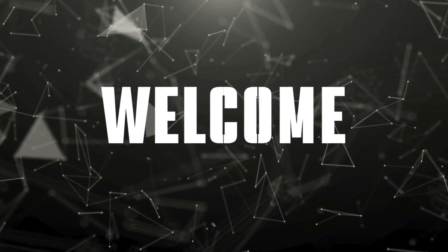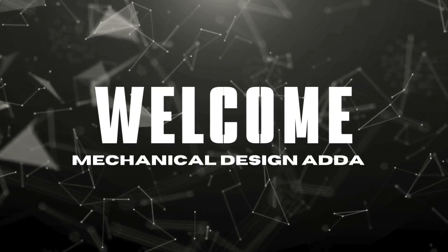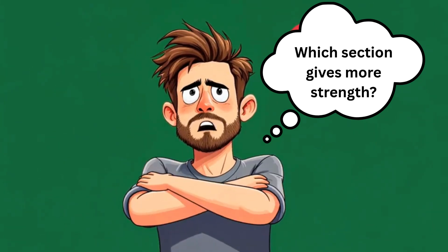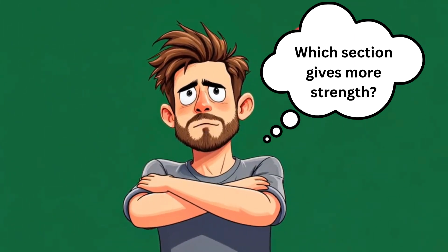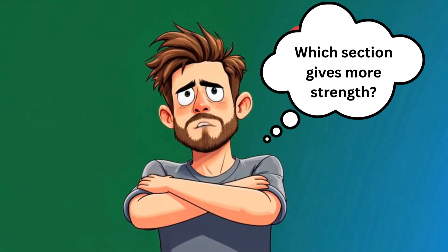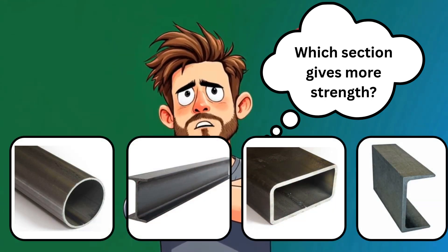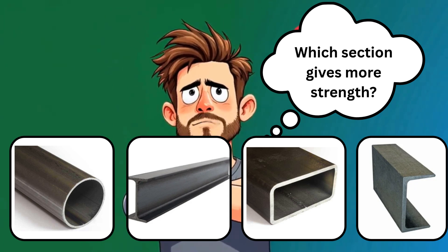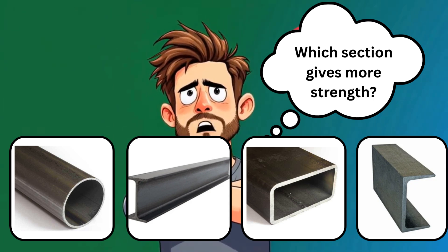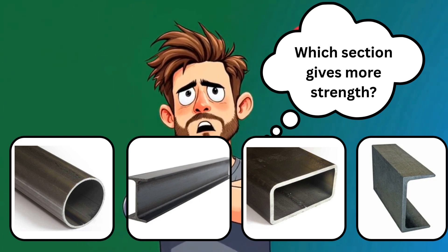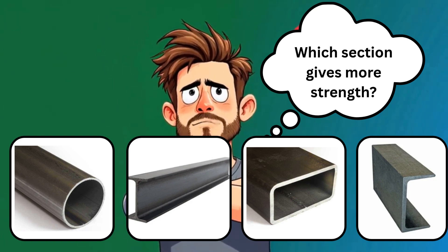Hello friend, welcome back to Mechanical Design Adam. Today's question is very simple but very important: which section gives the more strength? Circular section, I-beam section, rectangular section, or C section — which section gives the more strength?